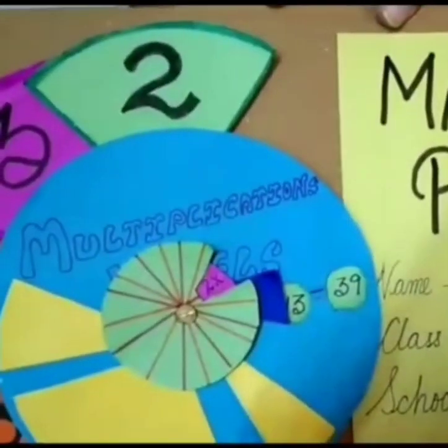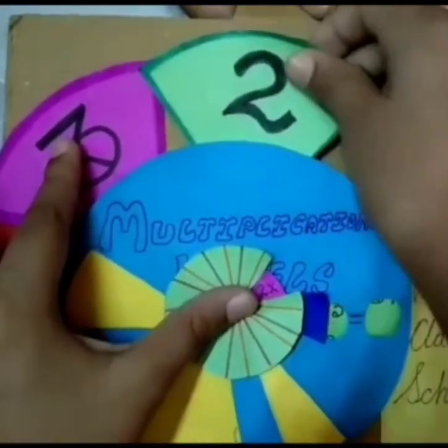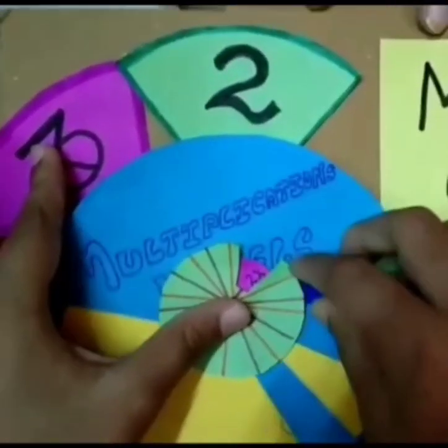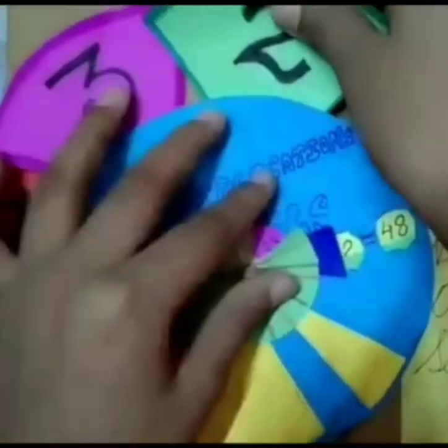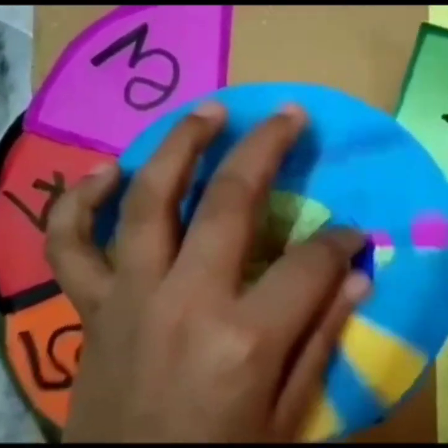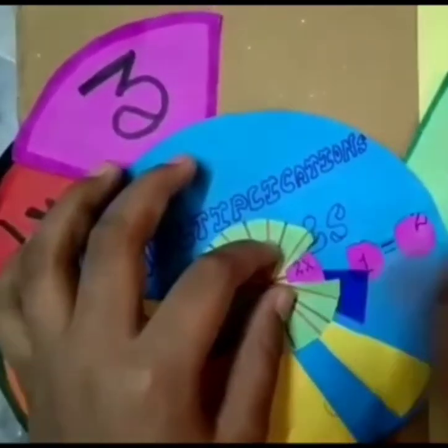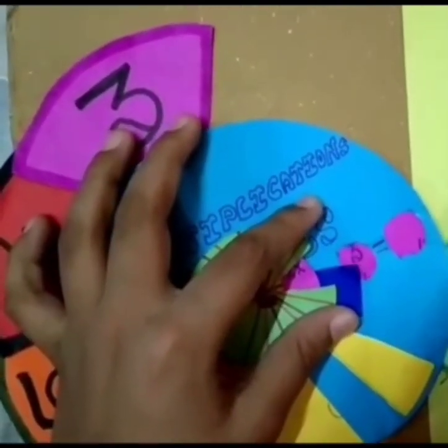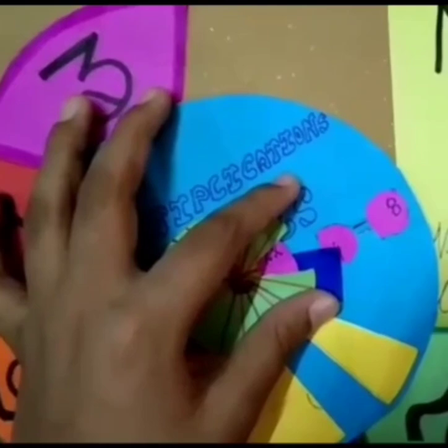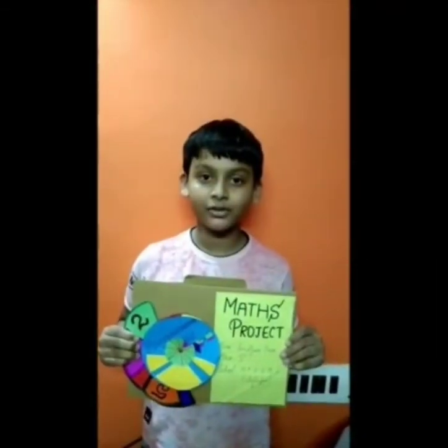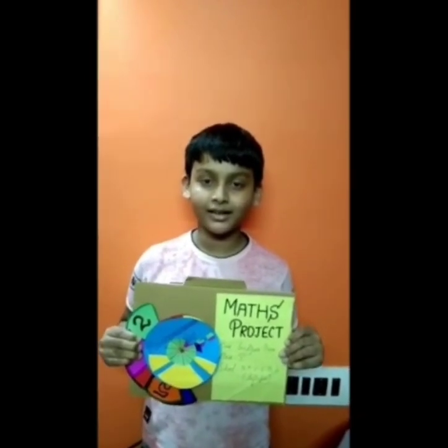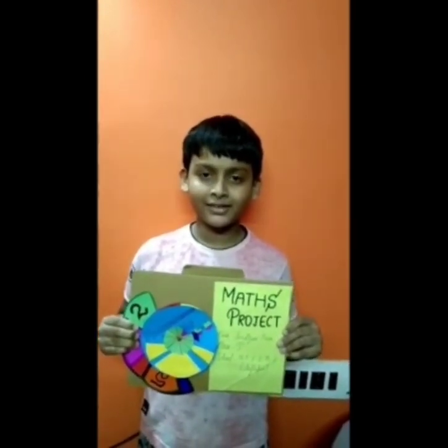Good evening to my respected ma'am and my dear friends. I am Sandeepan Bera, standing in front of you to discuss an interesting fact about multiplication. For example, if we want to count table number 2, then we say: 2 times 1 is 2, 2 times 2 is 4, 2 times 3 is 6, 2 times 4 is 8, 2 times 5 is 10. I want to conclude my project by saying that nothing is impossible if we practice our math by enjoying it. Thank you.